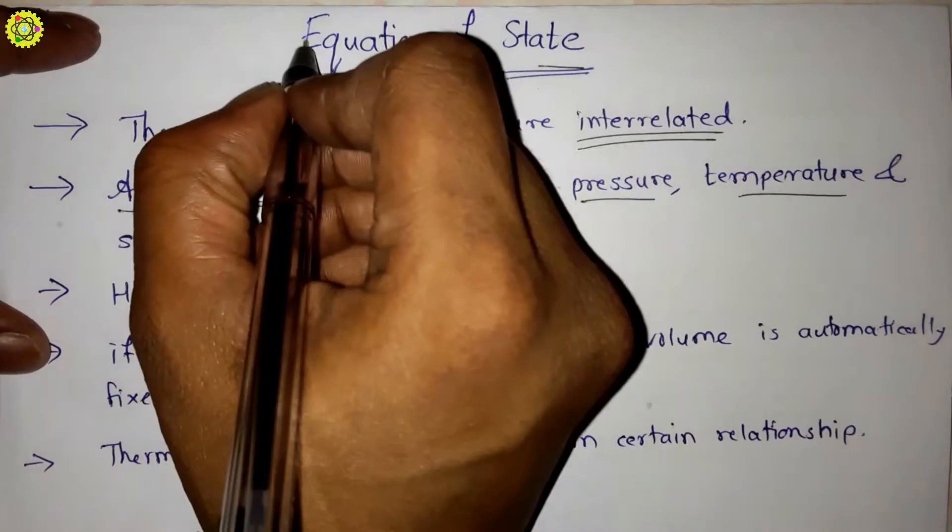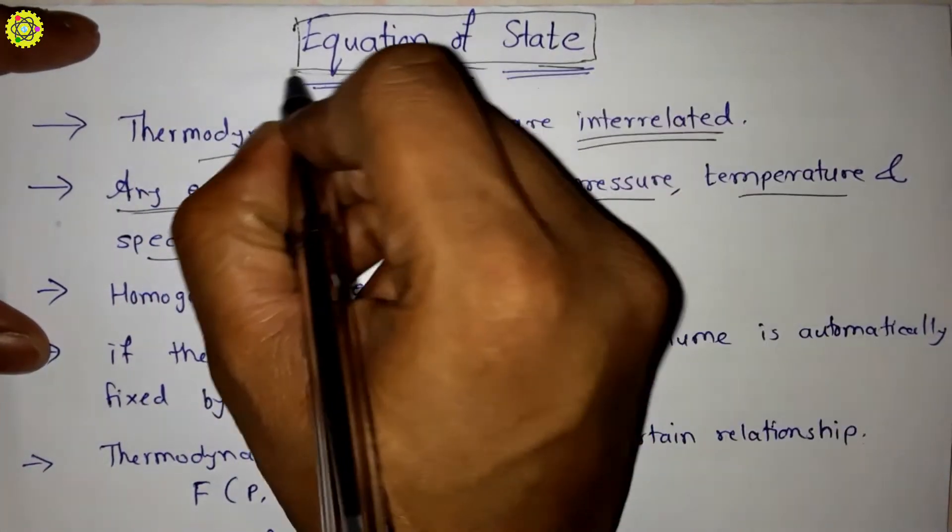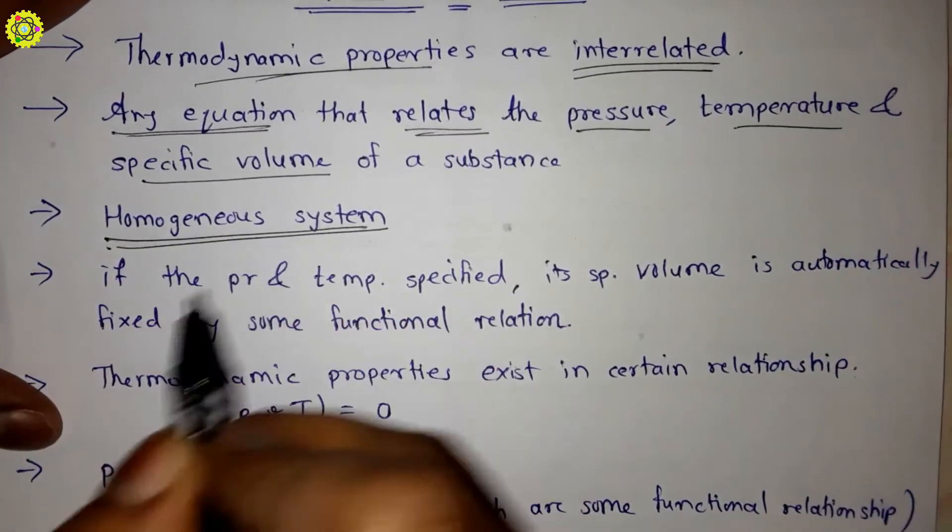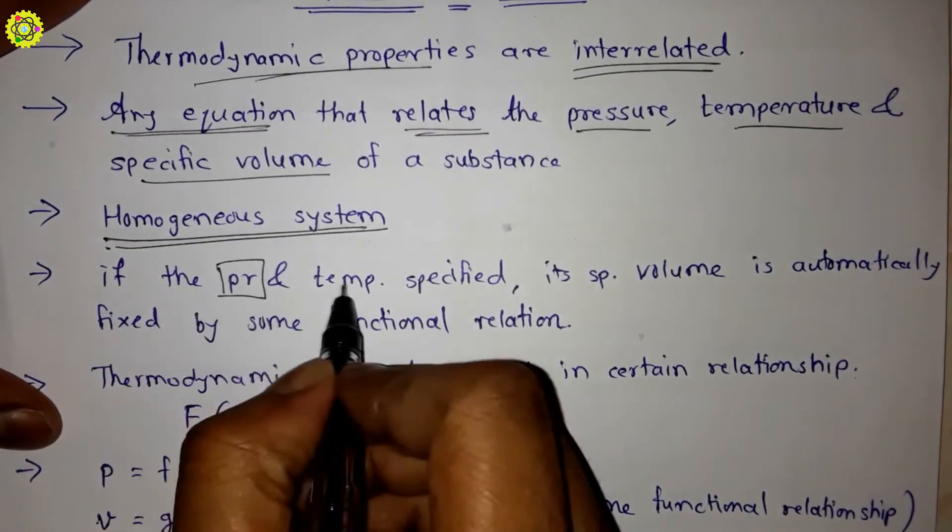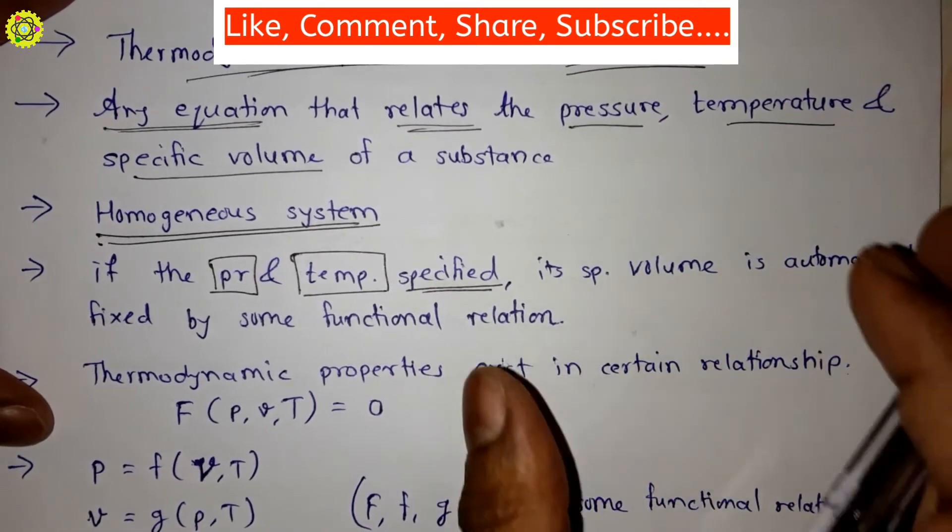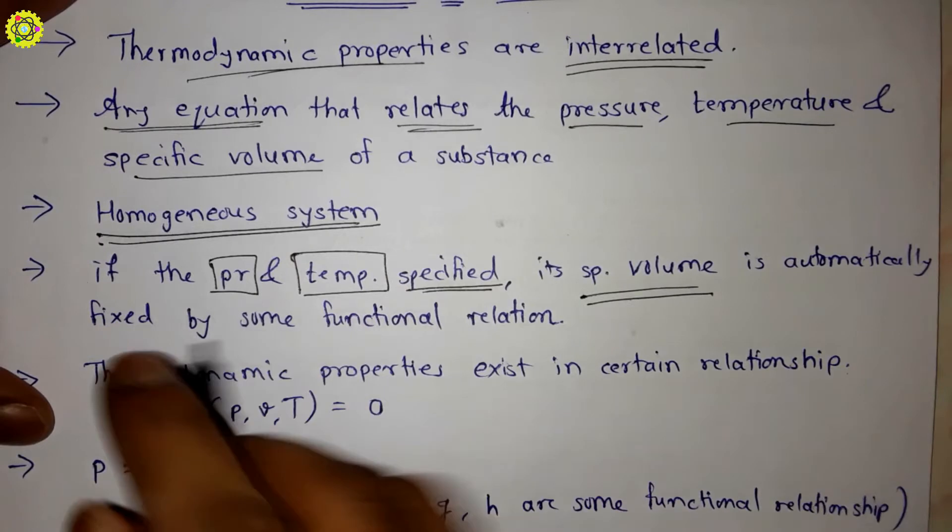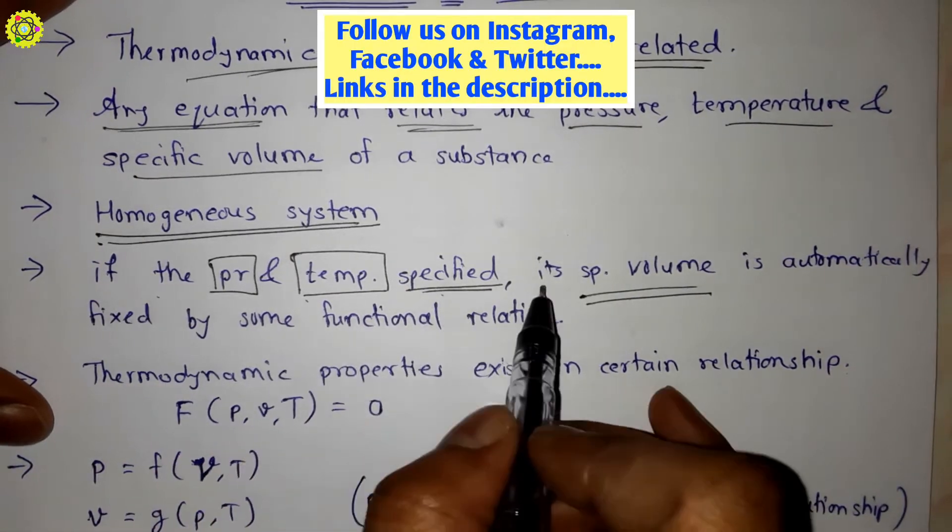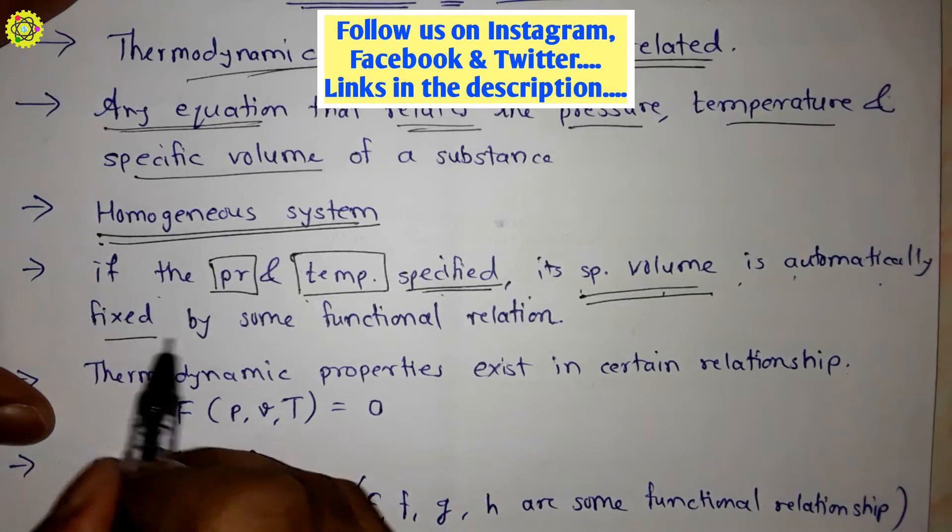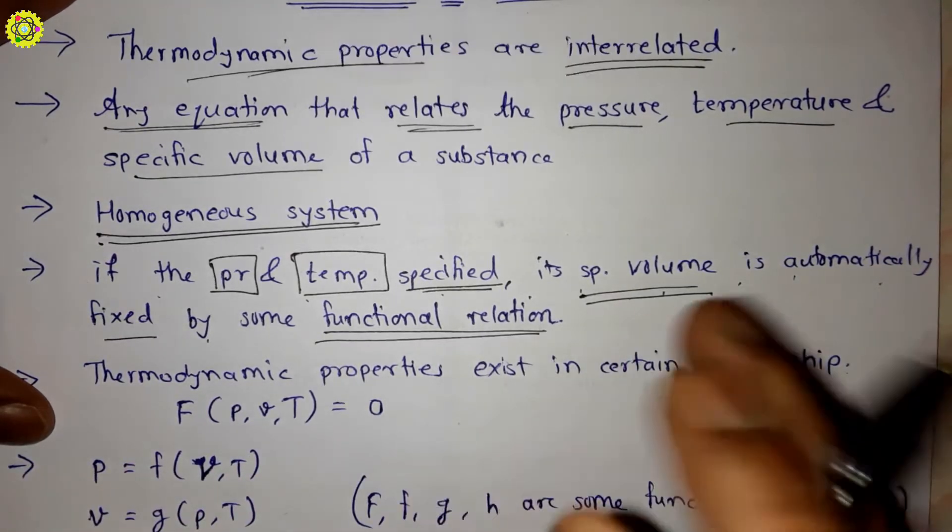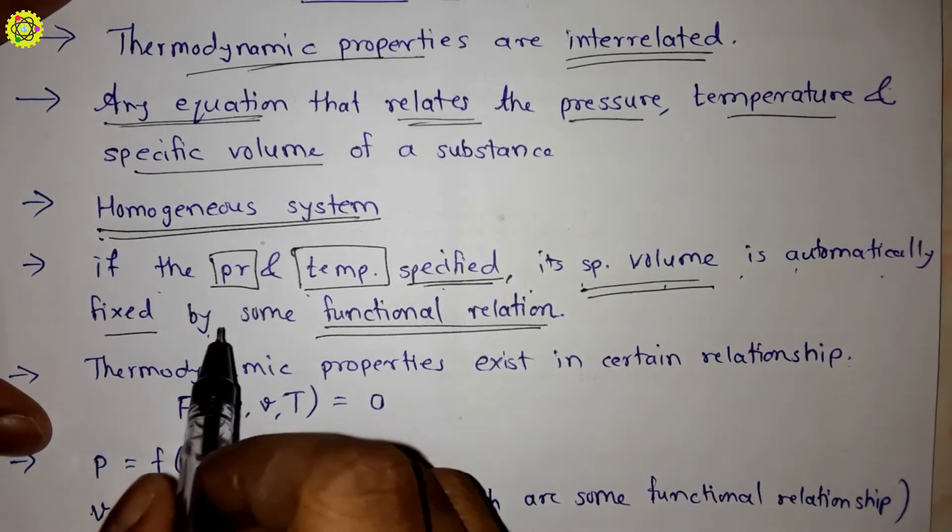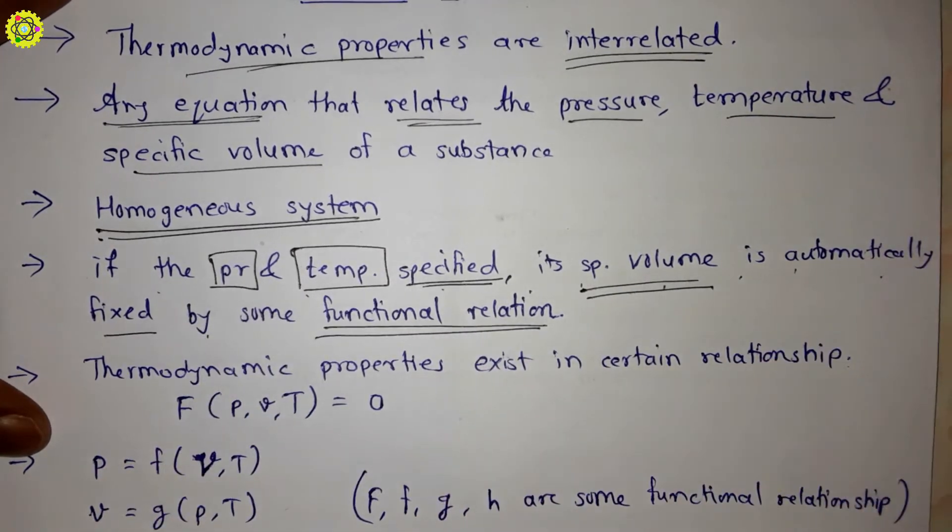For a homogeneous system, if the pressure and temperature are specified, we can easily calculate the specific volume. When pressure and temperature are specified, the specific volume is automatically fixed by some functional relation.